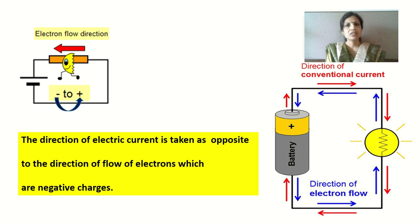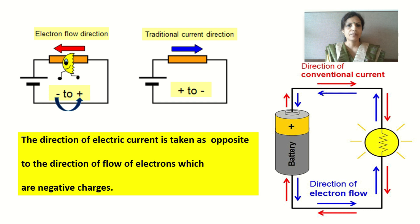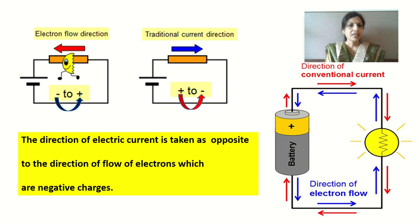When electricity was discovered, electrons were not yet discovered. So during that time the flow of electric current was supposed to be from the positive terminal to the negative terminal of the battery. The traditional or conventional flow of electric current is from positive terminal to the negative terminal of the battery. The direction of electric current is always taken opposite to the direction of flow of electrons, which carry negative charge.